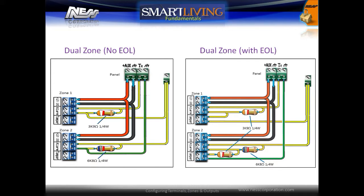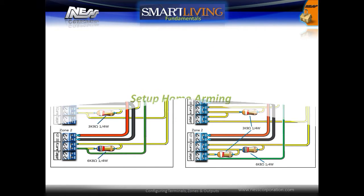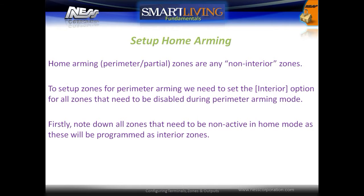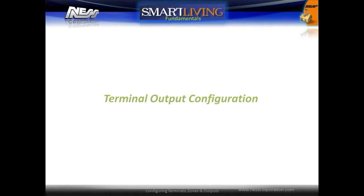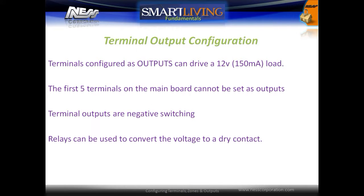Home arming will arm all zones that are non-interior zones. To set up zones for perimeter arming, we need to set the interior option for zones that will need to be bypassed during home mode arming. Note down all the zones that need to be non-active in home mode, as these will be programmed as interior zones. Enter installation programming, scroll down and select Zones, select a zone to program, select the Zone Options, and set the Interior option to On, then press OK.